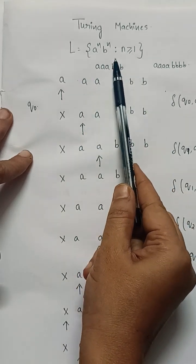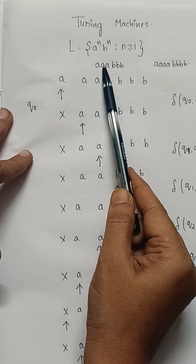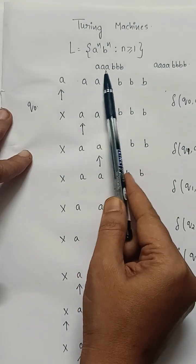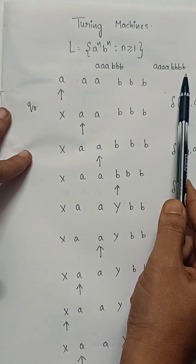The language says a power n b power n such that n greater than or equals to 1 means equal number of a's should be followed by equal number of b's. If there are 3 a's, there should be 3 b's. If there are 4 a's, then there should be 4 b's.